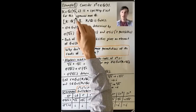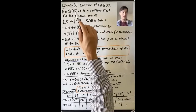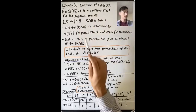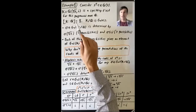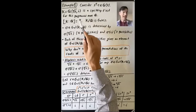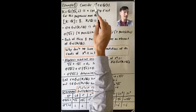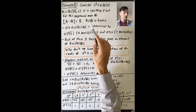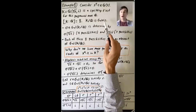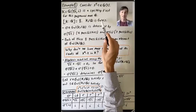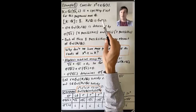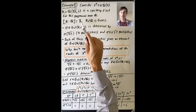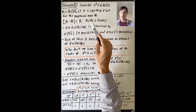When I write 'fourth root of two,' I mean the positive real number that you take the fourth power of and you get two. We've seen before that the degree of K over Q is eight. And because K is the splitting field of a separable polynomial, K over Q is a Galois extension. So that means the order of the group of automorphisms of K fixing Q is eight — that's the Galois group of K over Q.